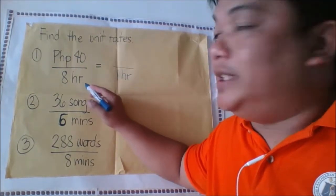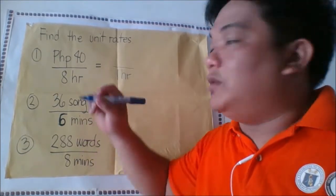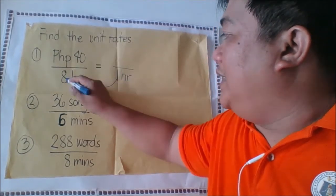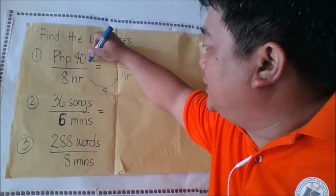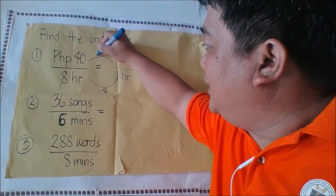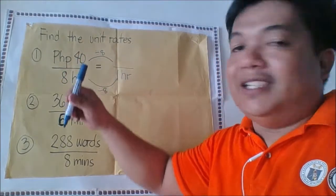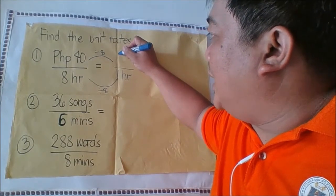8 divided by 8 is 1. Again, to be fair, let us also divide the first term by 8. So 40 divided by 8 is equal to 5 Philippine pesos. So 5 Philippine pesos is to 1 hour.